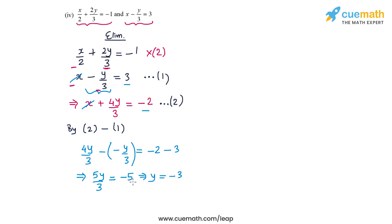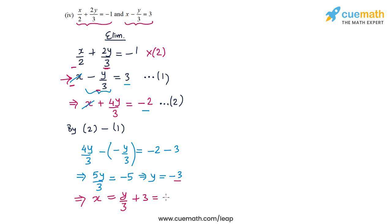So y is equal to minus 3. From the second equation, x equals y by 3 plus 3. Since y is minus 3, y by 3 is minus 1, and minus 1 plus 3 is 2. So the solution to this pair is x equal to 2 and y equal to minus 3.